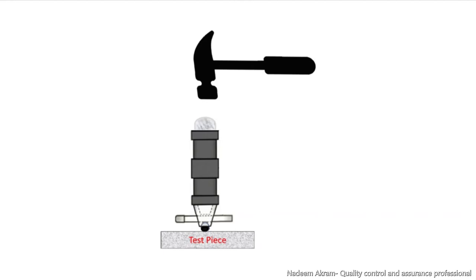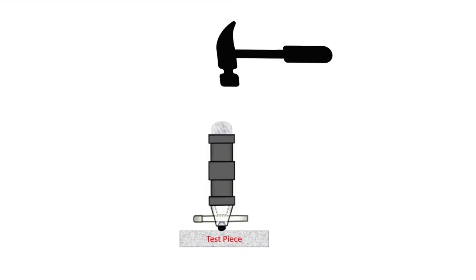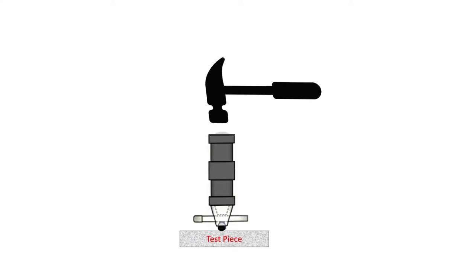Apply the impact load on the top of the plunger using a one to two kilogram hammer. The blow should not be very hard and should be as perpendicular as possible.